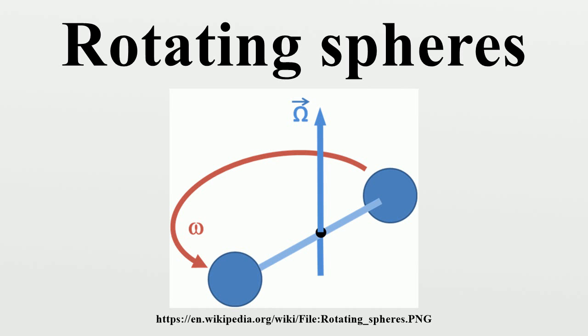An interpretation that avoids this conflict is to say that the rotating spheres experiment does not really define rotation relative to anything. In particular, rather the experiment is an operational definition of what is meant by the motion called absolute rotation.